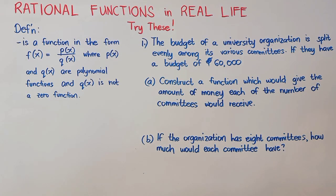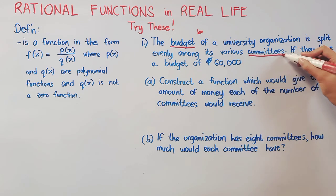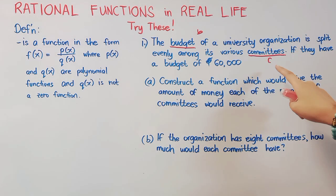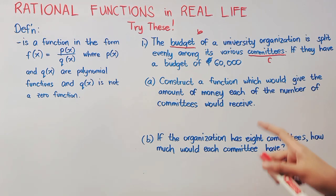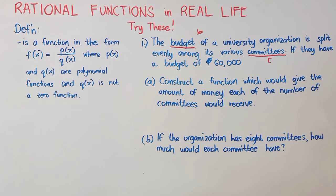Now, let us try more examples. Examples Number 1. The budget of a university organization is split evenly among its various committees. If they have a budget of 60,000, letter A, construct a function which would give the amount of money each of the number of committees would receive. To construct a function, we have to identify the variables. Let budget be B and the number of committees be C. Now, budget is dependent on the number of committees. Therefore, our committees here is our independent variable, and our B is our dependent variable.